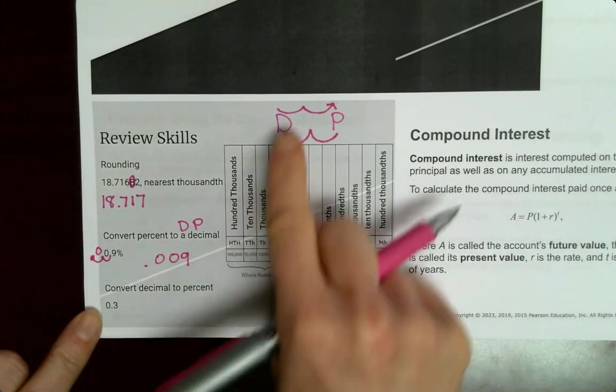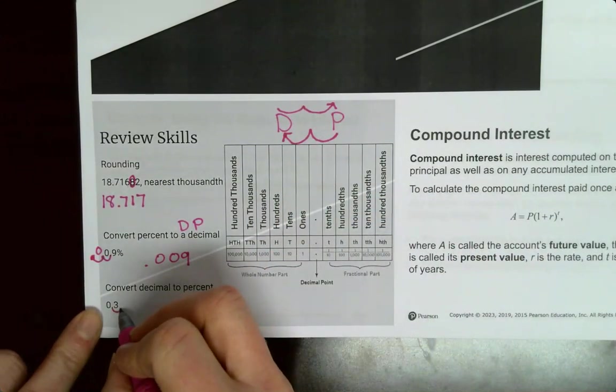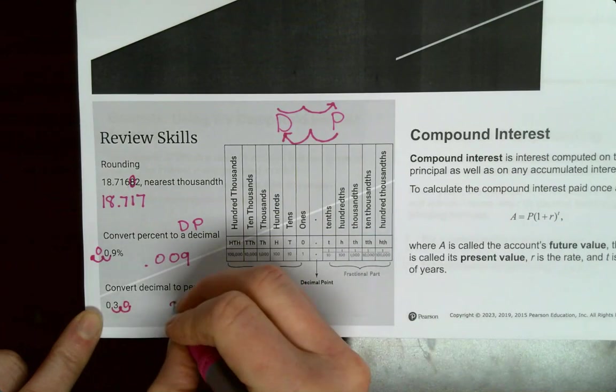If I want to convert from decimal to percent, I'm going to go right. One, two, thirty percent.